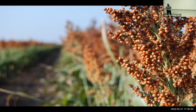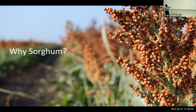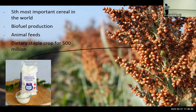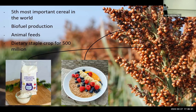Sorghum is the fifth most important cereal in the world. Here in the U.S., sorghum is high in starch, so it has the basic requirements to be processed into biofuel. But beyond that, it's the staple daily crop for over 500 million people in the world — about 500 times the population of Tucson. Here are some products you can get from sorghum: flour for baking that is gluten-free, and also some people from parts of Africa prepare sorghum as porridge and enjoy it with fruits.